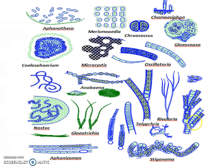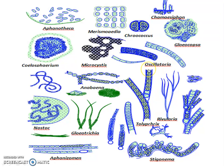These are diagrammatic examples of some cyanobacteria. Nostoc is here, Anabaena is here, Oscillatoria is here, Gloeocapsa is here.